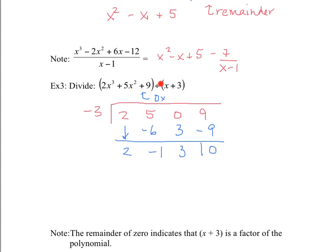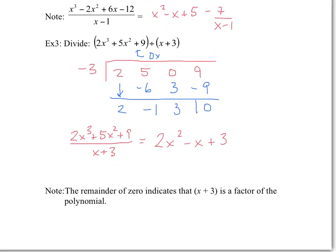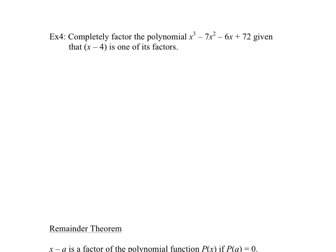A remainder of 0 means x plus 3 is a factor of this trinomial. Dividing gives 2x squared minus x plus 3 with zero remainder, where the coefficients 2, negative 1, and 3 come directly from the synthetic division result.